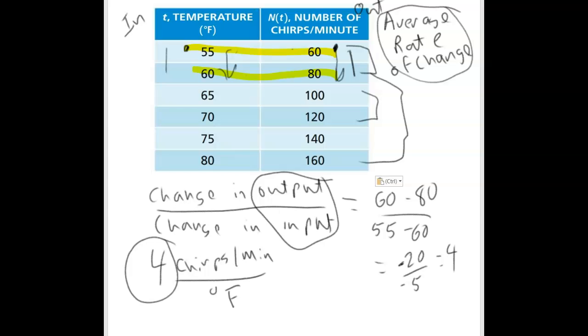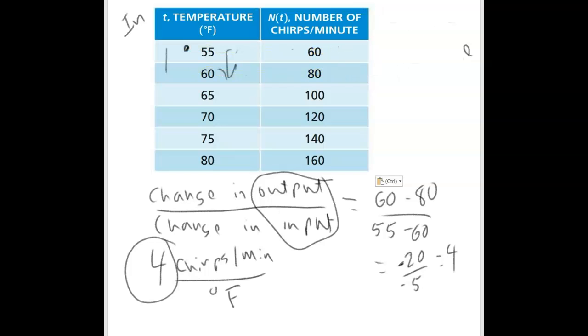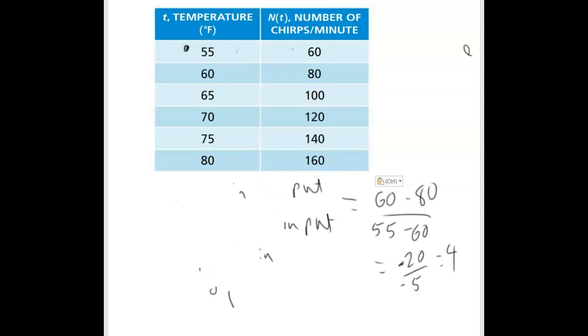If I graph that line and plotted each of these points with number of chirps on the y-axis and temperature degrees F on the x-axis, if I plotted each of these points, they would fall on a line.